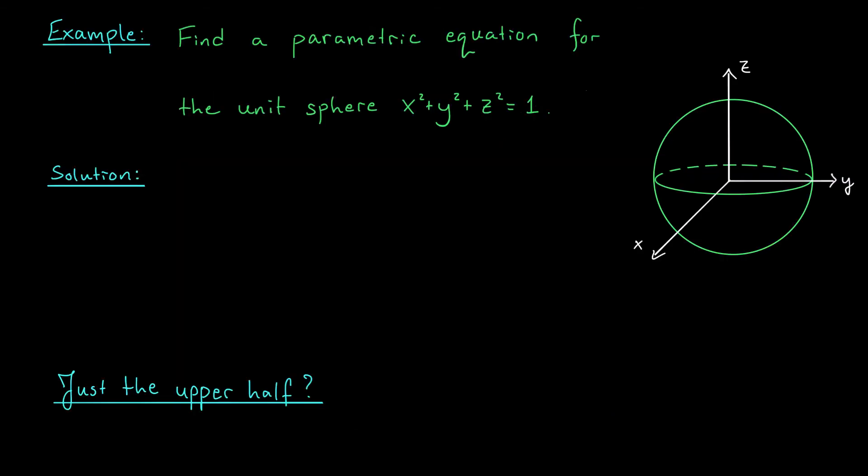Let's see if we can use the same ideas from the last slide to come up with a parametric equation for the unit sphere, X squared plus Y squared plus Z squared equals 1. The sphere can be described most easily in terms of, well, you guessed it, spherical coordinates. The equation is simply ρ equals 1. So we'll turn to our conversion formulas.